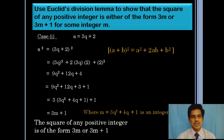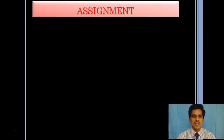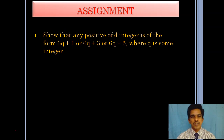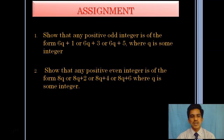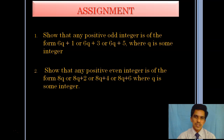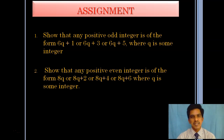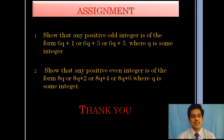The assignment for today: show that any positive odd integer is of the form 6q plus 1, 6q plus 3, or 6q plus 5. The next question is to show that any positive even integer is of the form 8q, 8q plus 2, 8q plus 4, or 8q plus 6. Solve these problems and post your answers. Thank you.